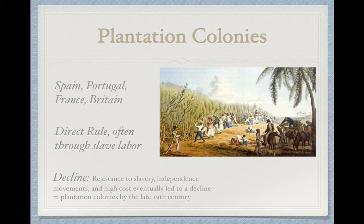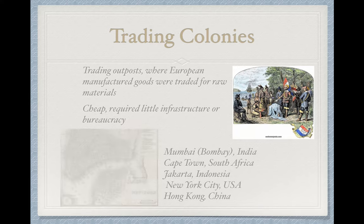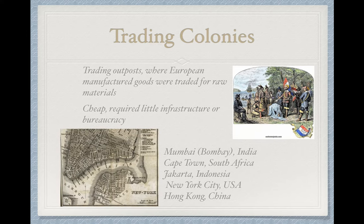You also had trading colonies—basically coastal cities or outposts where Europeans tried to trade their manufactured goods, everything from guns to clothing, for local goods they didn't have access to. This was a much more humanitarian way of trading for Europeans, and it was cheap and required little infrastructure or bureaucracy. Examples include Bombay/Mumbai, Cape Town, Jakarta, New York City, and Hong Kong—all of these places began as European trading colonies.